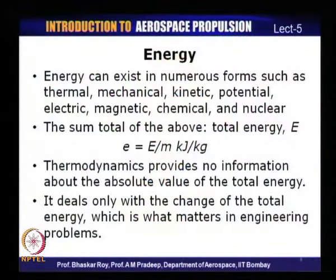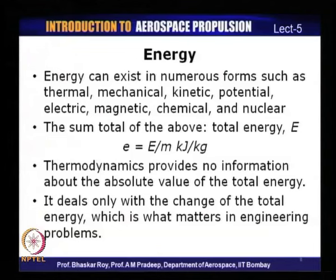Now let us look at the different forms of energy and their implications. Energy can exist in different forms — thermal energy, mechanical energy, kinetic energy, potential energy, and so on. The sum total of all these forms of energy — mechanical, kinetic, potential, electric, magnetic, chemical, nuclear, and so on — is referred to as the total energy of a system, usually denoted by the symbol E. Specific energy, denoted by small e, is the total energy per unit mass.